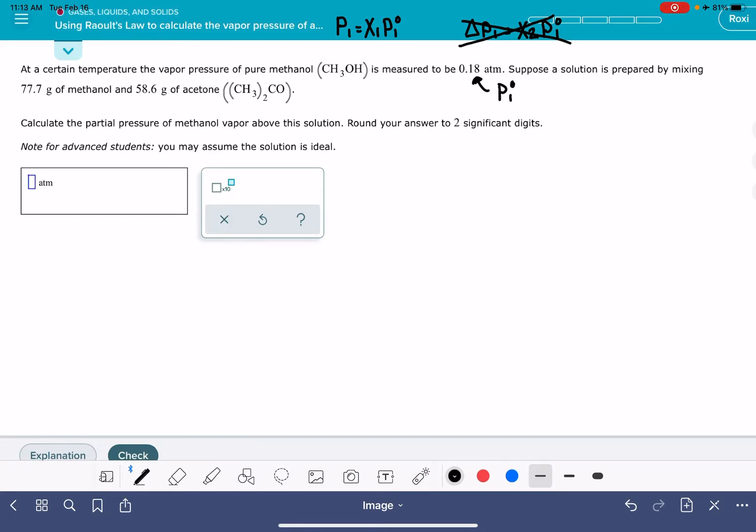So all that we have to figure out is the mole fraction of methanol. This is going to be the moles of the methanol, CH3OH, divided by the total number of moles of both of the methanol as well as the acetone. So what we need to do is a lot of gram-to-mol conversions here.